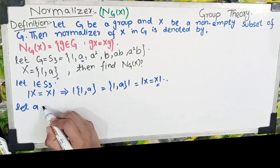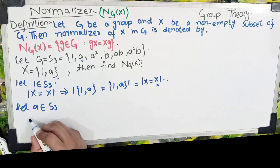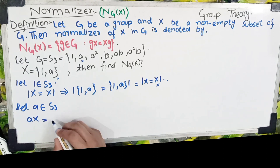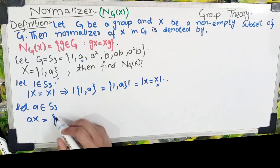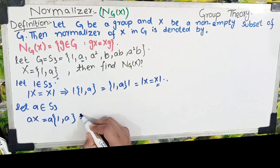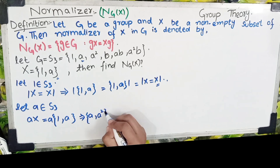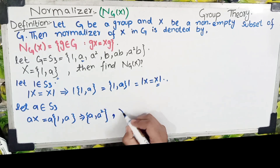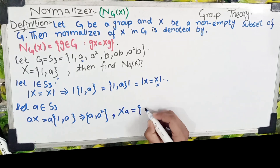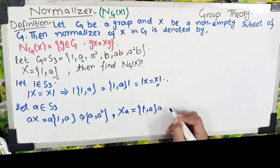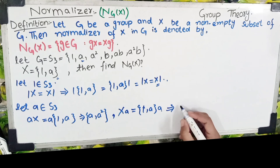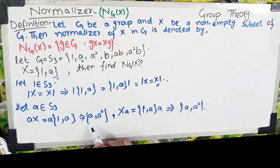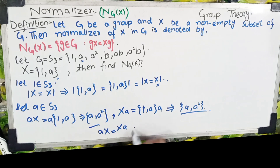اب دوسرا member لیتے ہیں: let a ∈ S3۔ ہم نے check کرنا ہے کہ aX = Xa۔ S3 ایک non-abelian group ہے۔ a·{1, a} = {a, a²}۔ اور {1, a}·a = {a, a²}۔ یہ دونوں answer same آ رہے ہیں، so a·X = X·a۔ a بھی normalizer میں آ جائے گا۔